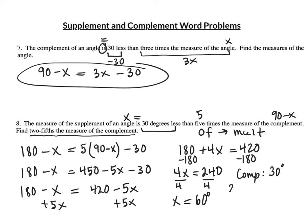What I want is two-fifths of the complement. "Of" means multiply — I'm going to take two-fifths of the complement of 30 degrees. So I break 30 into five parts and take two of them. Two-fifths times 30 equals 12. Now you might be tempted to label this degrees, but it's not degrees because this isn't an angle — it's two-fifths of the complement. Do always label though: if looking for an angle, label degrees; if centimeters, feet, or miles, always label.